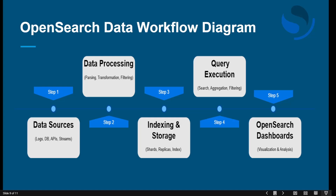Here is the OpenSearch data workflow diagram which explains step-by-step how data moves, what processing is done, and how indexing works. Step one is collecting data from different sources — like logs from databases, APIs, or live data streams. For example, a website can collect customer searches, product details, or user activity data from these sources.